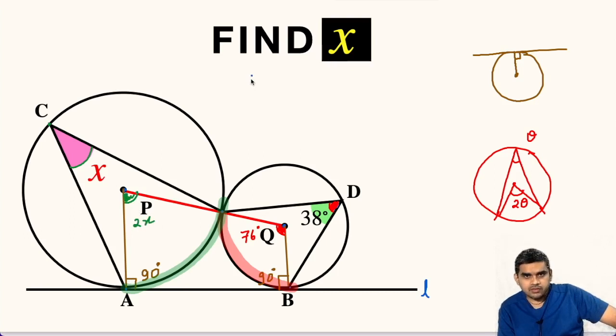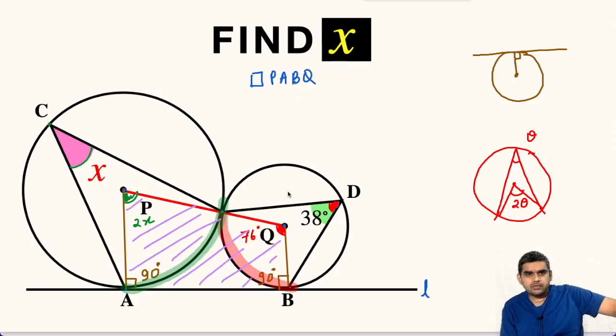Now let us focus on quadrilateral PABQ. We know that sum of all the interior angles of a quadrilateral is 360 degrees. So from here we can write 2x plus 90 degrees plus 90 degrees plus 76 degrees is equal to 360 degrees.